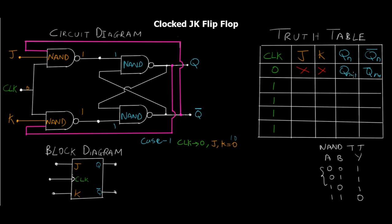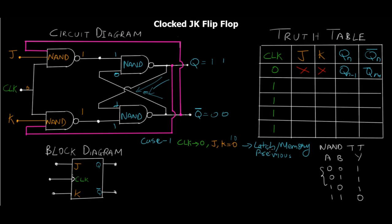We get the previous state by assuming one of the outputs. If Q was one and is fed back as one, the output becomes zero; this zero is fed back to the upper NAND gate, giving one-and-zero which complements to one, and that one feeds back to give zero again — the state is locked. This is known as the latch state, memory, or previous state. So that was case one: when the clock is zero, the output is always the previous state.